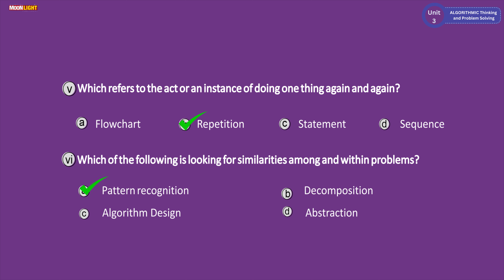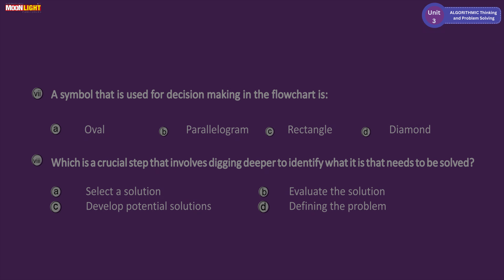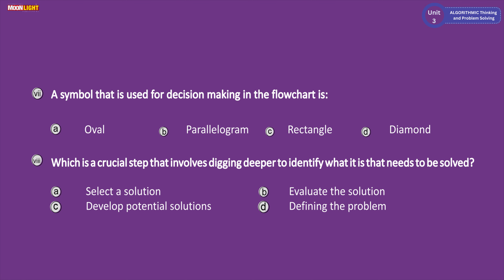Question seven: which symbol is used for decision making in a flowchart? The options are: A symbol, B parallelogram, C rectangle, D diamond. The correct answer is option D, the diamond shape. The diamond shape is the symbol used for decision making in flowcharts.